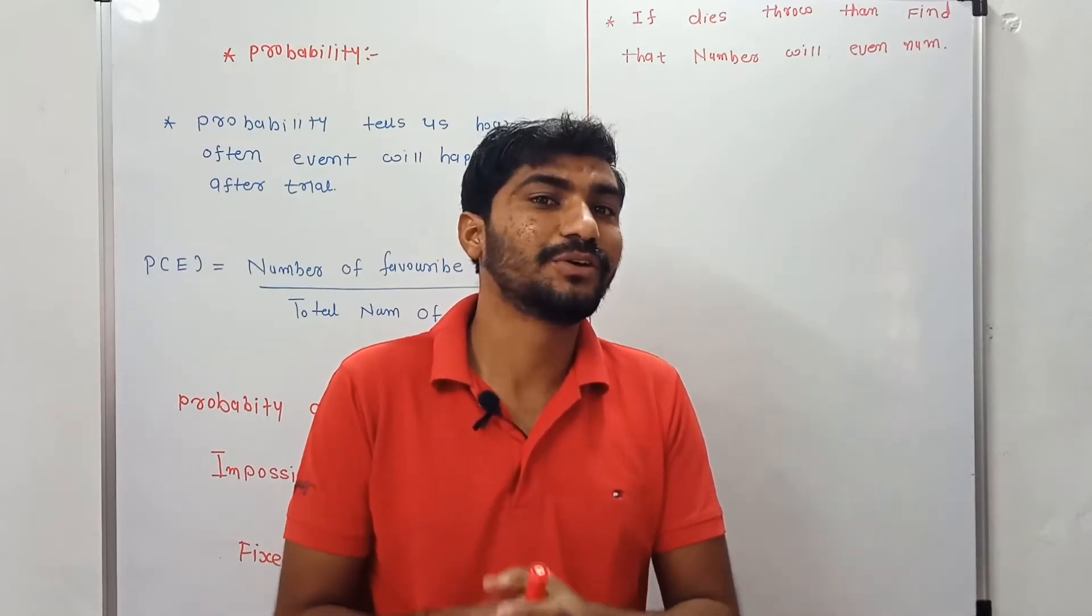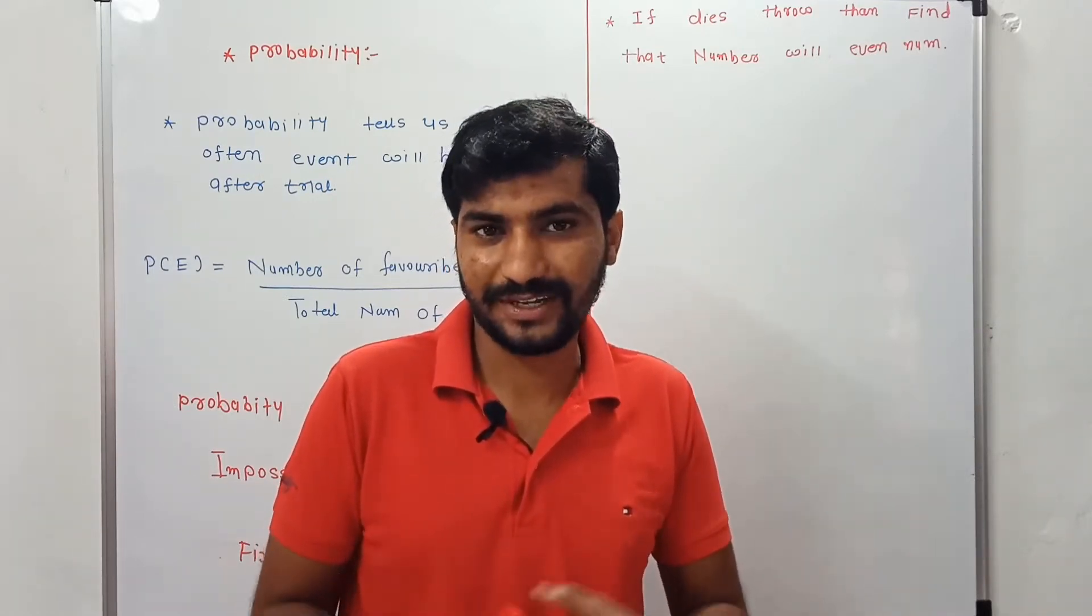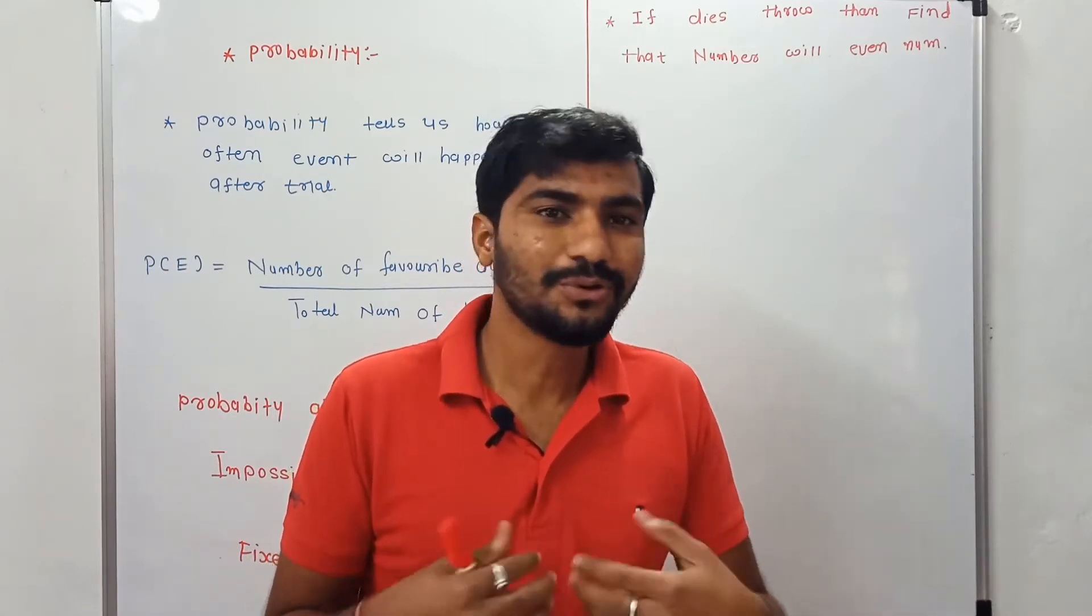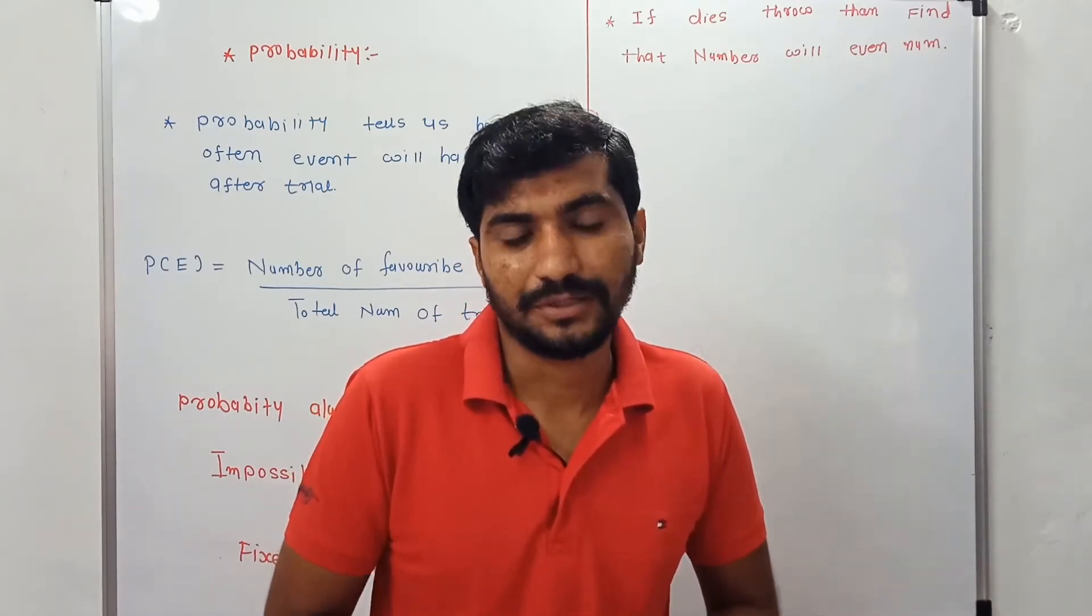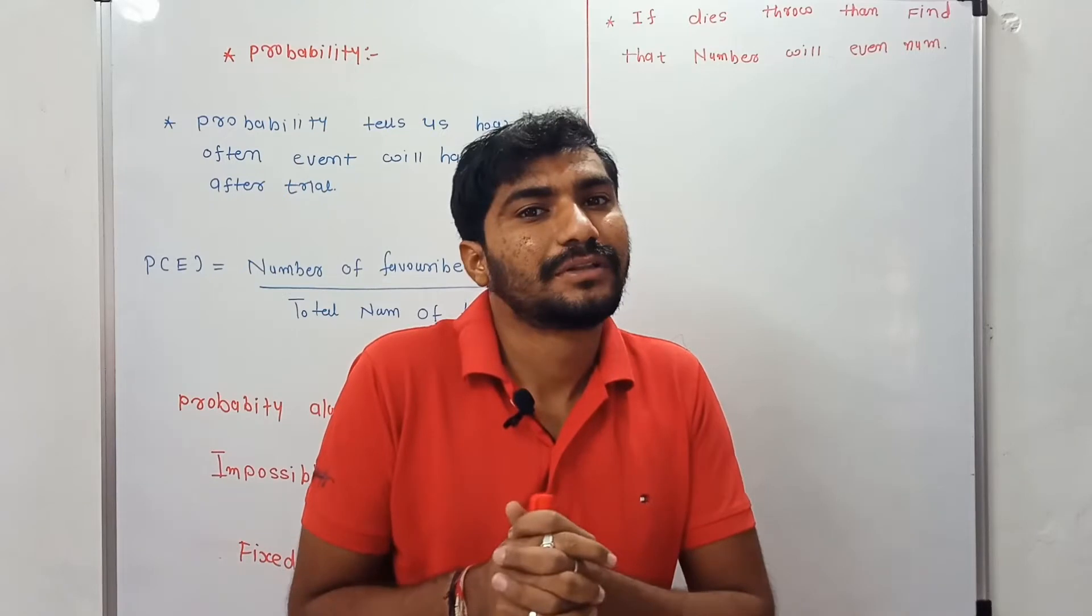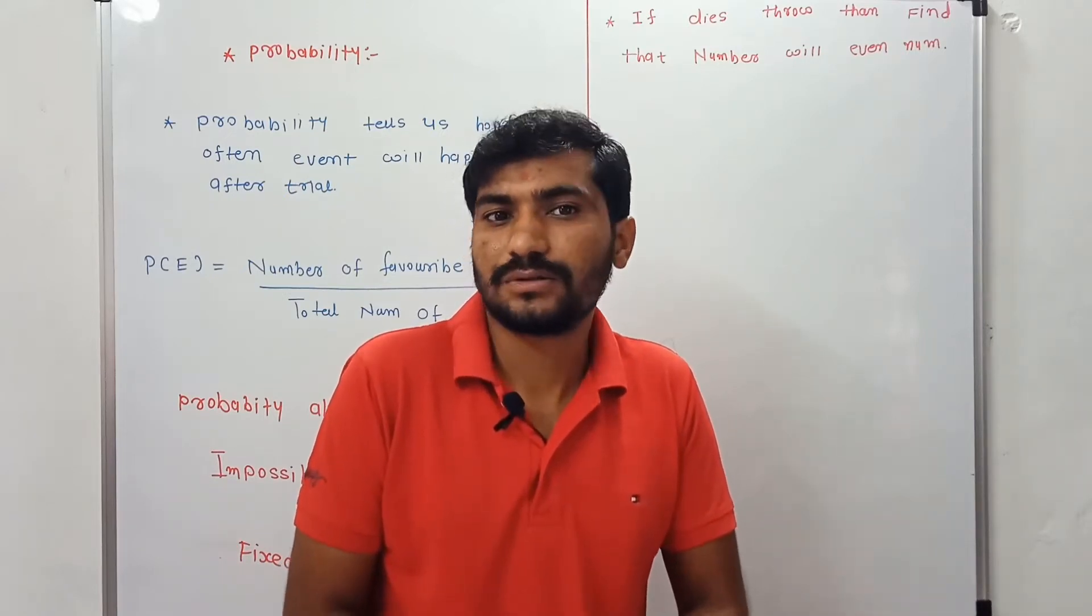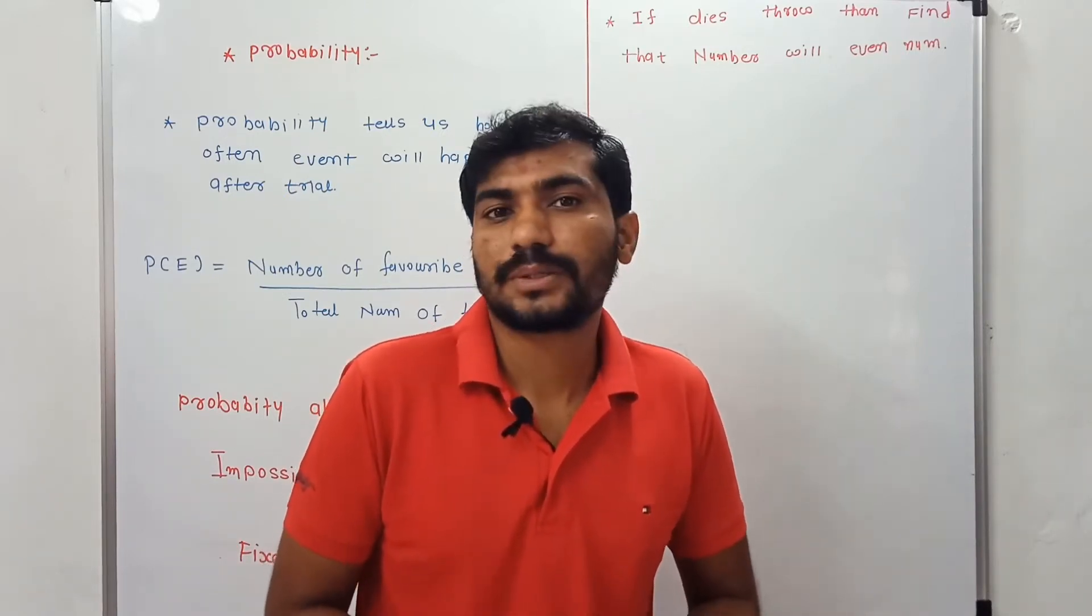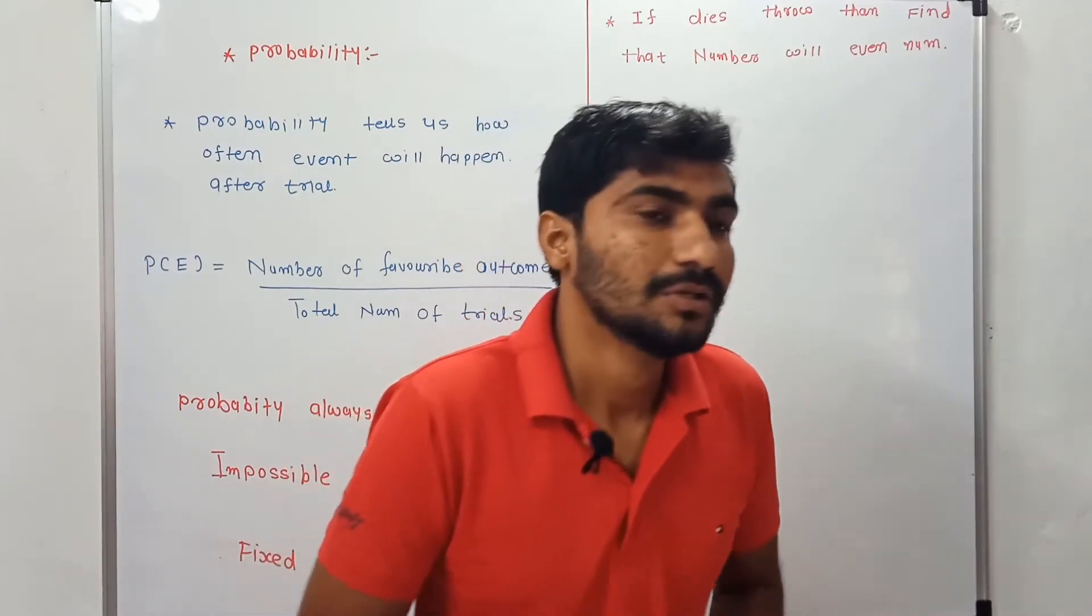For example, we always want 100 out of 100 percent. So there is probability possibility. Probability is something that helps with one or some of the experiments.